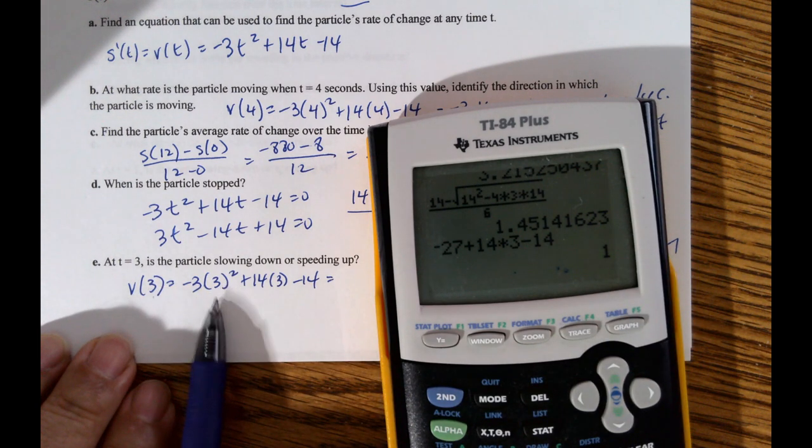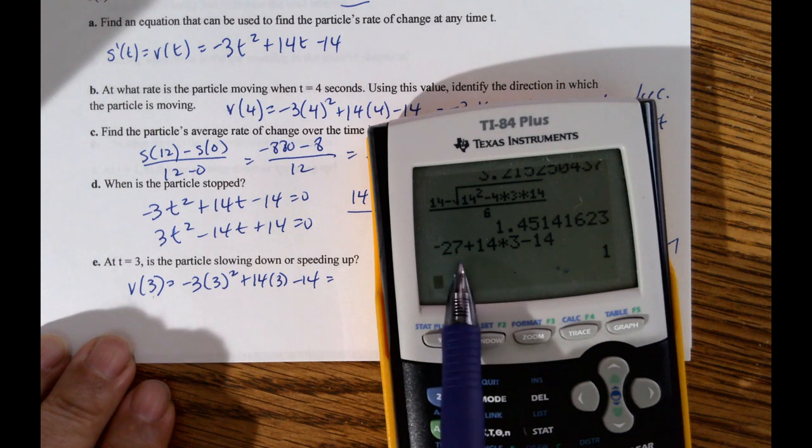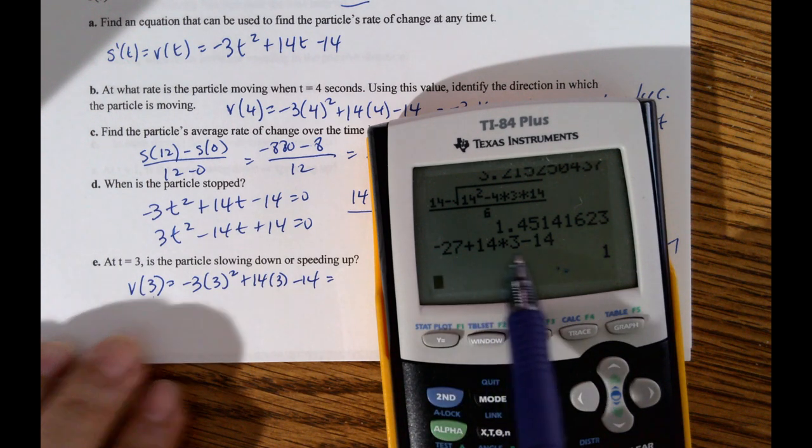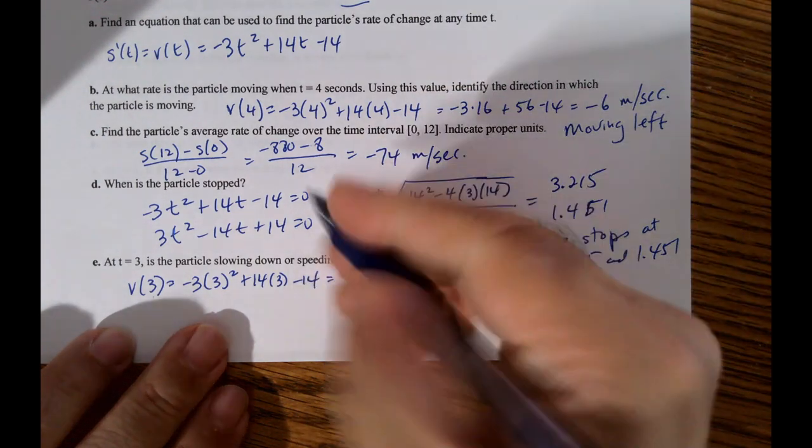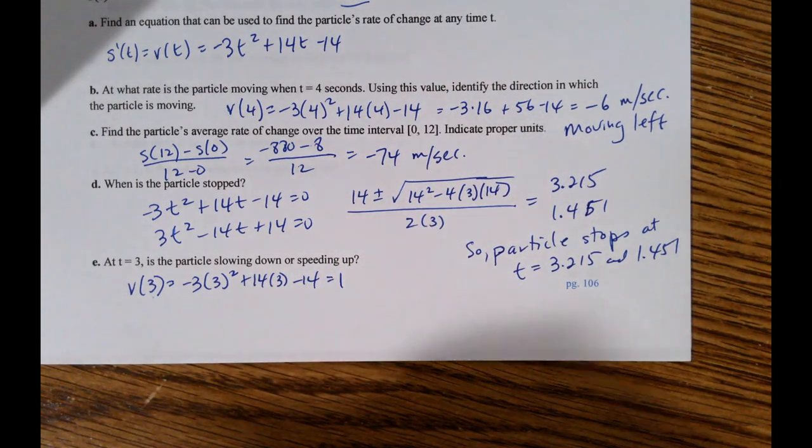So 3 squared is 9. 9 times 3 is 27. That's where the negative 27 comes from. I didn't do that in my head. 14 times 3. And I have a minus 14. So that's 1.